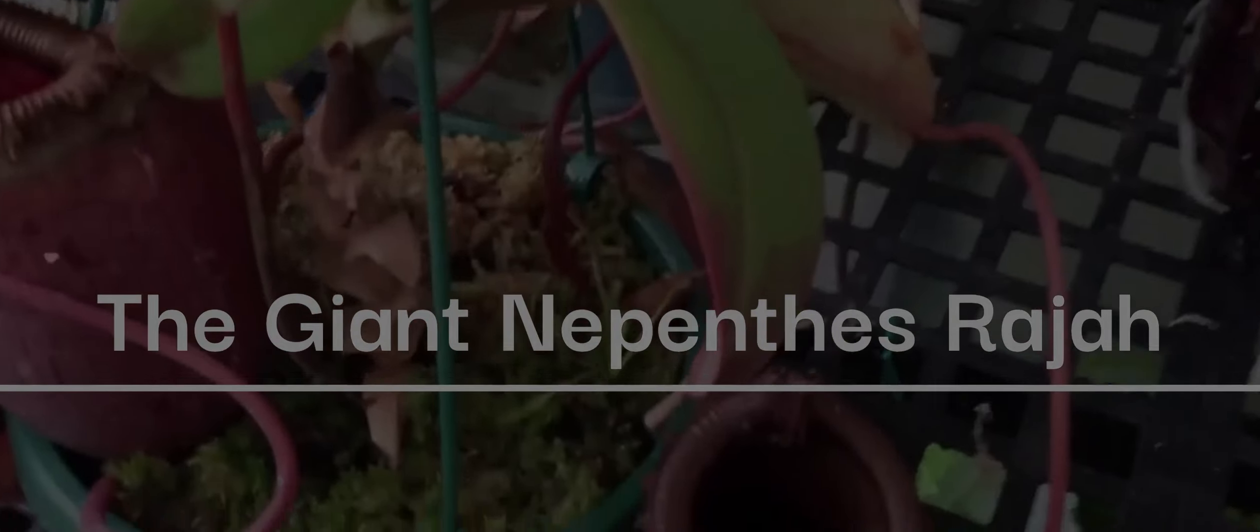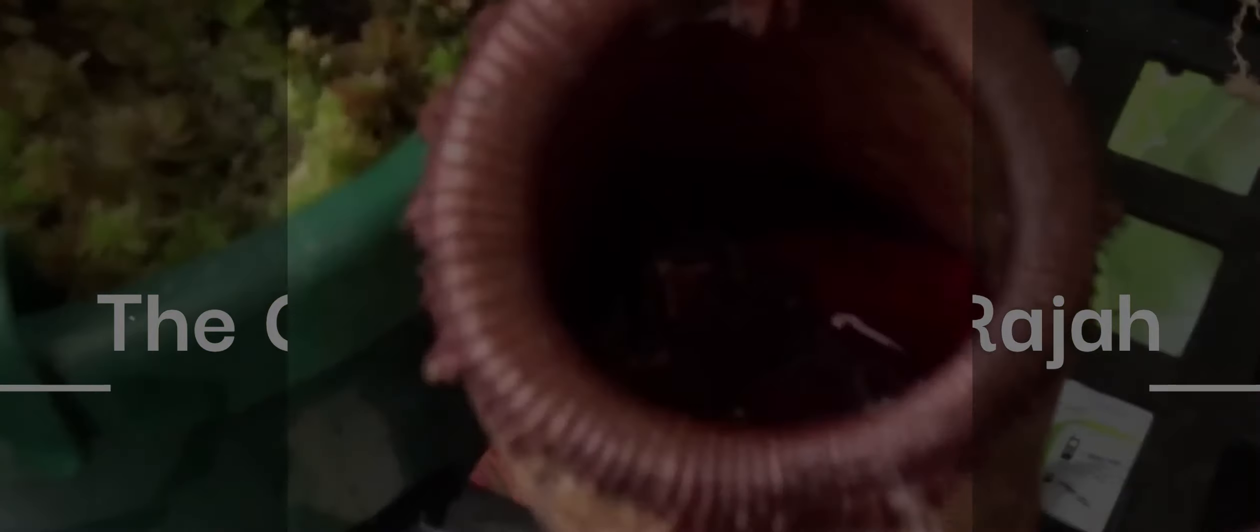1. The Giant Nepenthes Raja. This titan of the pitcher plant world can grow large enough to hold small mammals like rats. It's nicknamed the monkey cup, as thirsty primates have been documented drinking from its leaves, and is a superstar among carnivorous plants.